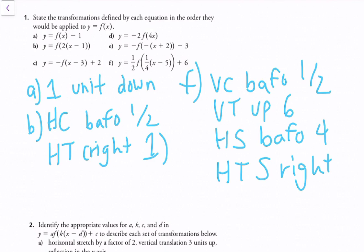For example part f, y equals one-half times f of one-quarter times x minus 5, all plus 6. First, there's a vertical compression by a factor of 1 over 2 — we see that coefficient in front of f. Then a vertical translation up 6 units. Then, for the horizontal transformations, there's a horizontal stretch by a factor of 4, because that's 1 divided by 1 over 4. Finally, a horizontal translation 5 units to the right, determined by setting x equal to 5 to make the argument 0.